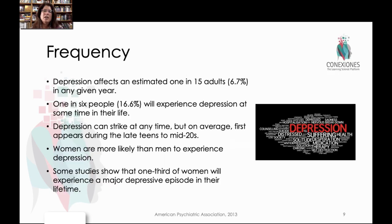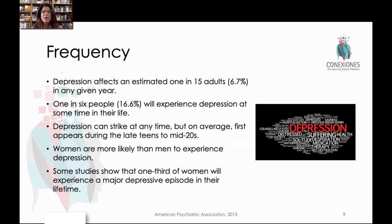The frequency of depression is estimated to be about 1 in 15 adults in the United States, and at least 1 in 6 people will experience depression at some time in their lives. Depression can strike at any time, but on average it first appears in the late teens and mid-20s, meaning childhood depression or depressive disorders are very rare. There's a big field of research linking depression to changes in hormonal structures, which is why it tends to present during early adolescence.